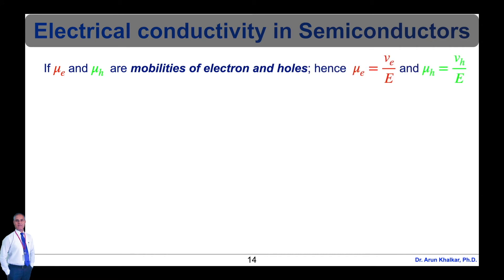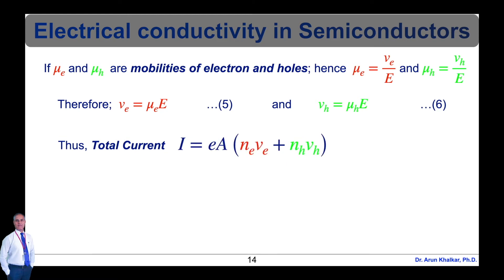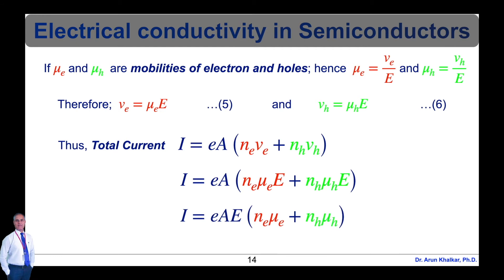If μ_e and μ_h are the mobilities of electrons and holes, then μ_e equals v_e divided by E, and μ_h equals v_h divided by E. Therefore, v_e equals μ_e times E (equation 5), and v_h equals μ_h times E (equation 6). Substituting these into equation 4, we get I equal to e·A·(n_e·μ_e·E plus n_h·μ_h·E), which simplifies to I equal to e·E·A times (n_e·μ_e plus n_h·μ_h). This is equation number 7.